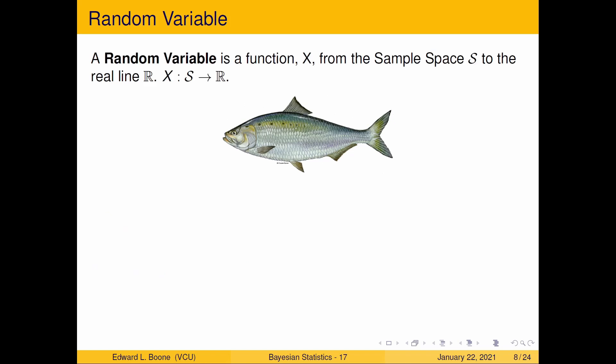A random variable is the same in this case as it was in the last case. A random variable is just a function that goes from the sample space to the real line. It takes something that happens from our experiment, that's what's in the sample space, and assigns it a number, which is what the real line is. If I were to measure the weight in milligrams of this fish, how do I summarize that?